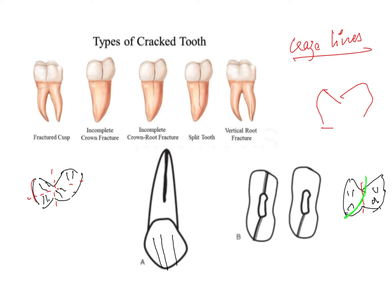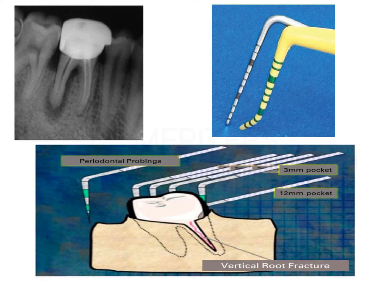A vertical root fracture involves a fracture only of the root segment. These are very difficult to diagnose on clinical findings alone — you need a radiograph and probing techniques. On a radiograph, a very typical J-shaped radiolucency is seen, which is diagnostic and pathognomonic of vertical root fractures.